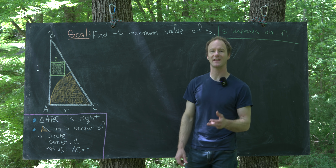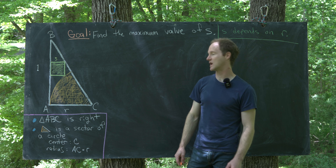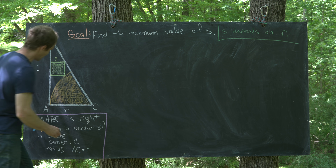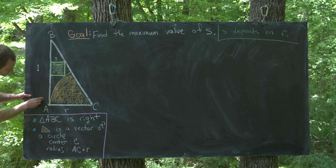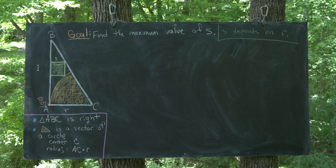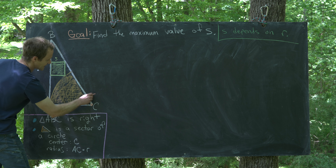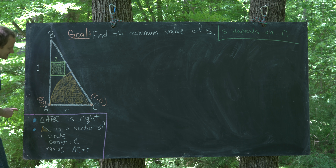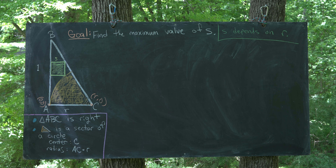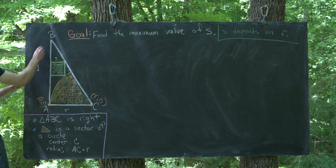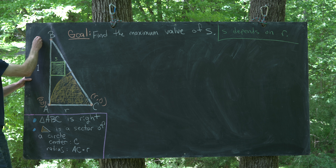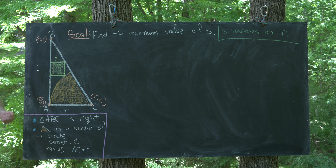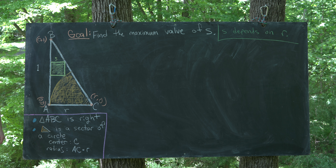There are a bunch of ways to do this. The approach here is via coordinate geometry, so we place this in the Cartesian coordinate plane. We put point A at the origin (0, 0), which makes point C at (r, 0) along the x-axis, and point B at (0, 1) along the y-axis. The hypotenuse and the circle play an important role, so we'll need equations for each.